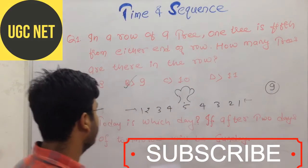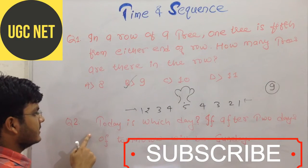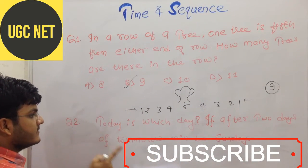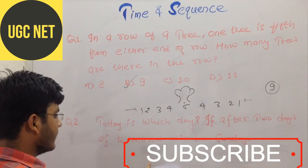So option B is correct. Now, let's come up to the next question which is saying that today is which day if after 2 days of tomorrow will be Sunday.